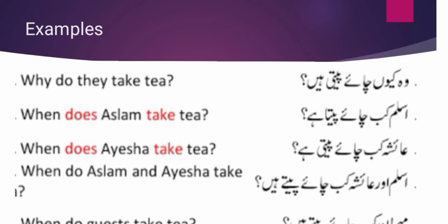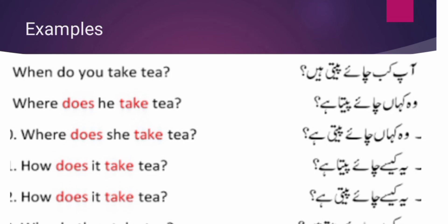Next examples: आप कब चाय पीते हैं — When do you take tea? वो कहाँ चाय पीता है — singular है, कहाँ के लिए where, singular के साथ does. Where does he take tea? Where does she take tea? He male के लिए, she next sentence में female के लिए — helping verb same does रहती है.